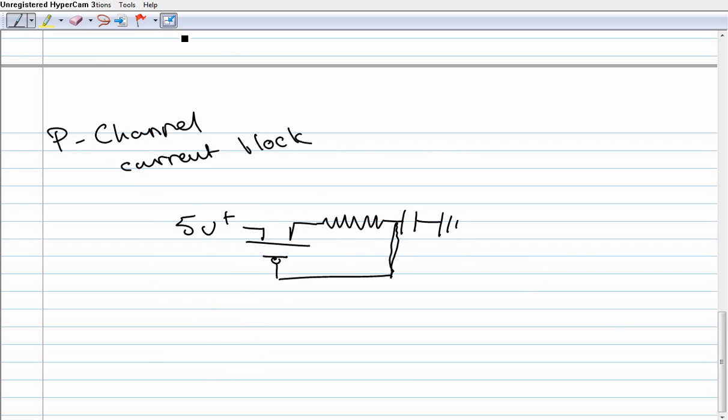Now let's talk about the P-channel and let's use that as a current block. So let's say you've got a 5 volt power supply. And then you're going to tie that into a P-channel MOSFET. And you're going to tie this to a resistor, and then a capacitor, and then this will just flow to ground. And then I'm going to try and connect that. Put a little dot. There we go.